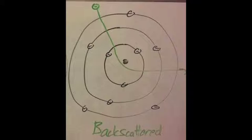Backscattered electrons leave the sample with a very small angle with respect to the incident beam, so the detector — usually a semiconducting material in a donut shape — is located around the incident beam. The energy of the backscattered electron is directly related to the mass of the atom it is scattered off of, giving compositional contrast where heavier atoms appear brighter.